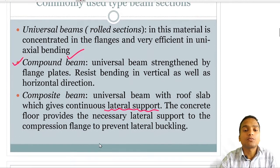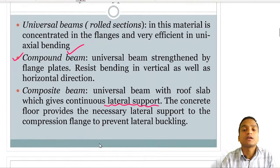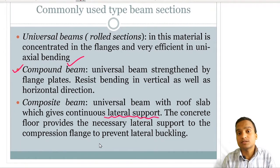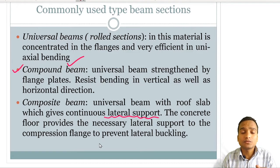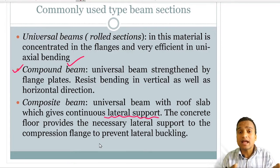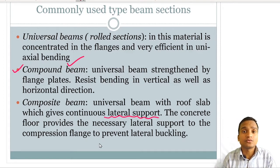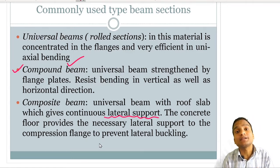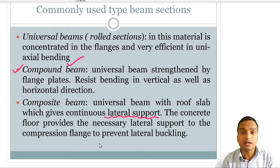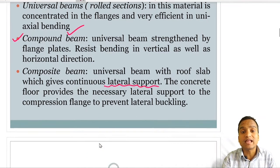The concrete slab provides the necessary lateral support to the compression flange to prevent lateral buckling. Lateral support is required in beams at the top flanges. Beams are flexural members with compressive forces at the top and tensile forces at the bottom. Bottom flanges can easily resist tensile load, but top flanges subjected to compressive forces may buckle laterally if sufficient lateral support is not provided — they can take the shape of ripples. Lateral supports are therefore very important.